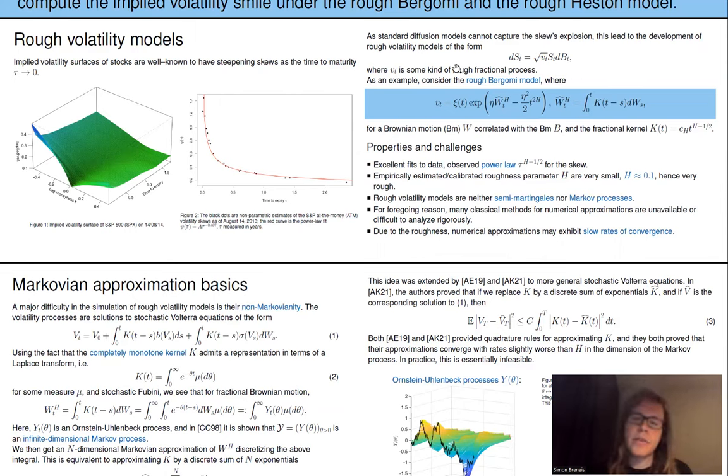So standard diffusion models cannot capture this explosion here. So instead, one can consider, for example, rough volatility models, which are models of the stock price of this form here. So the stock price S satisfies this stochastic differential equation, where W is some Brownian motion, and V is some kind of rough fractional process which models the volatility.